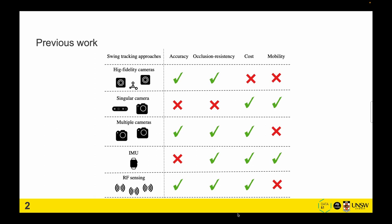There is some previous work that can be used for swing tracking, for example, high-fidelity cameras and singular cameras. However, vision-based methods suffer from occlusion, while high-fidelity cameras are very pricey and lack mobility.